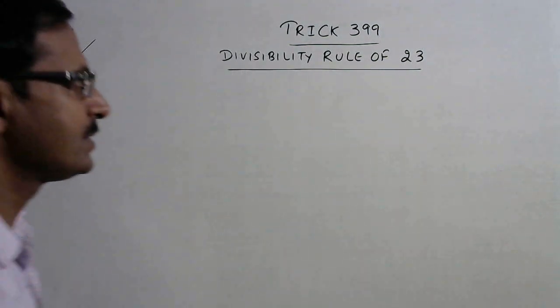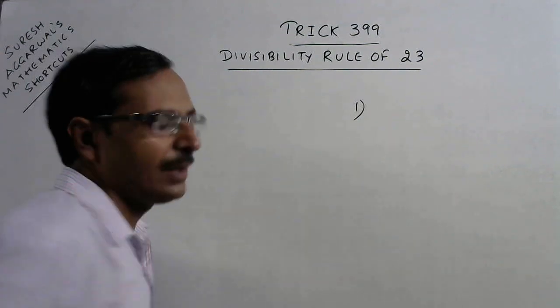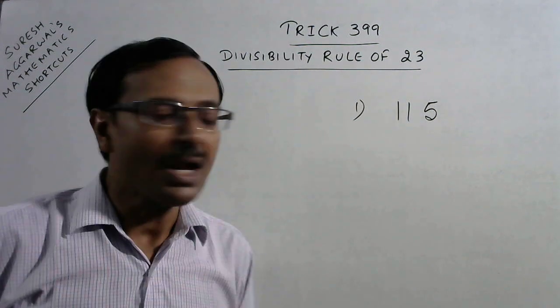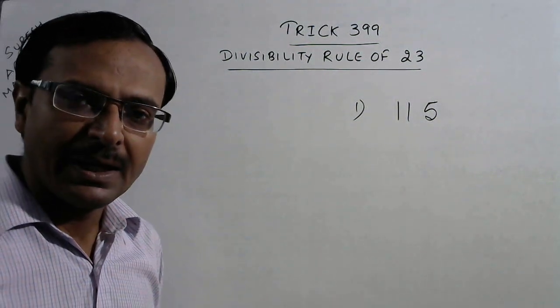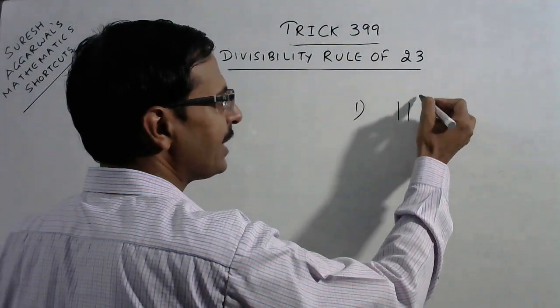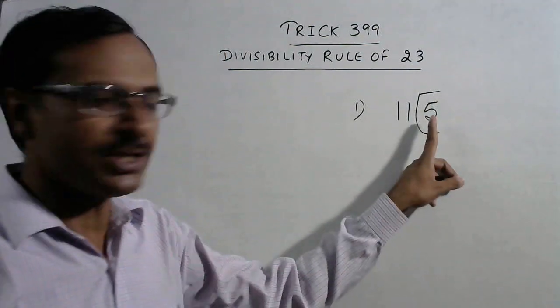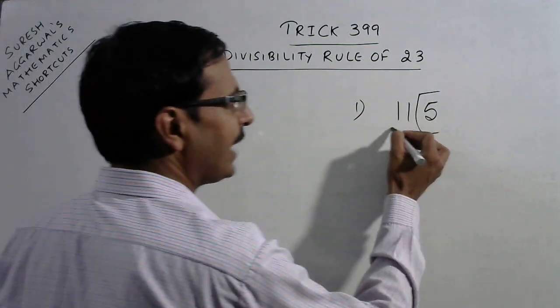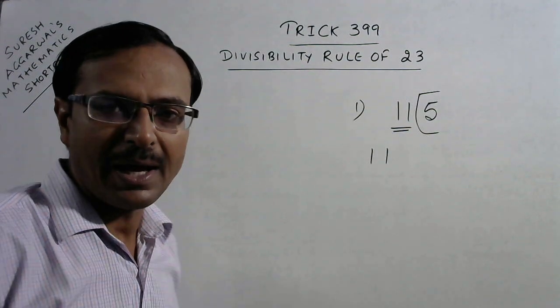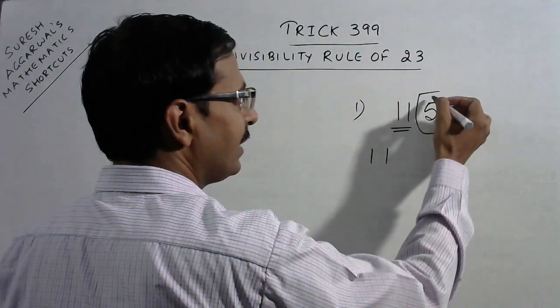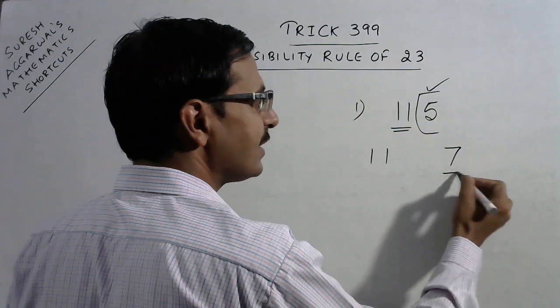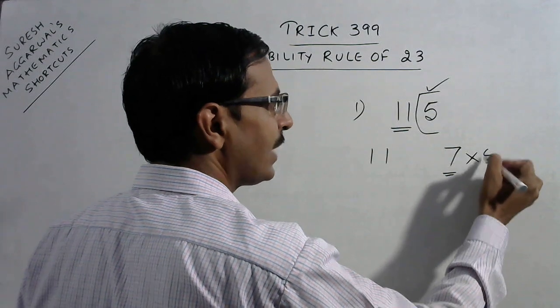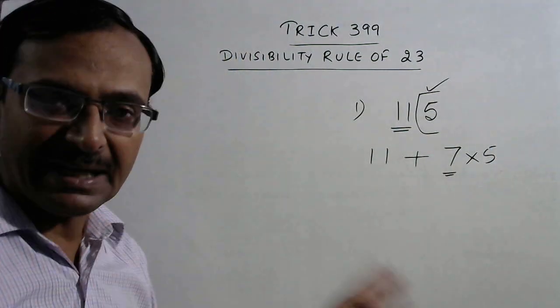Let us take one example. Say we are taking the example of 115. Now, what do we do in this case? First of all, just separate out the unit digit. The unit digit is 5 in this case. So what we do is, we write the remaining number 11 and then we take 7 times. Now this 7 is the fixed quantity which we have to take. 7 times the unit digit and add it to the remaining number.